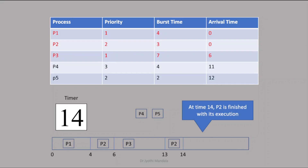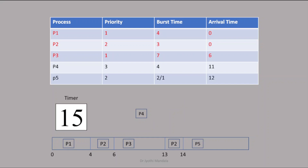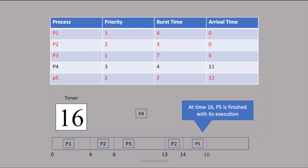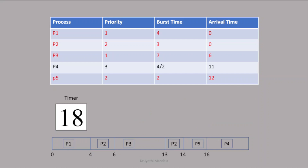Now we have P4 and P5. Among these two, P5 is having the highest priority, so P5 will be given a chance. P5 requires 2 seconds. After that, finally we have P4 which requires 4 seconds. So we execute that and by 20 seconds we have completed all process execution.